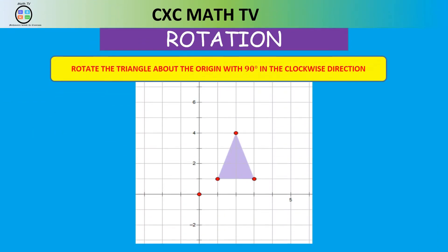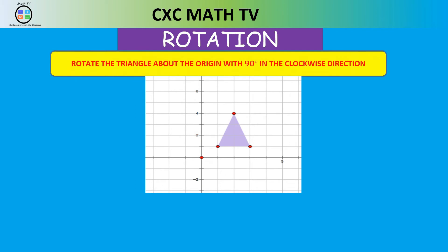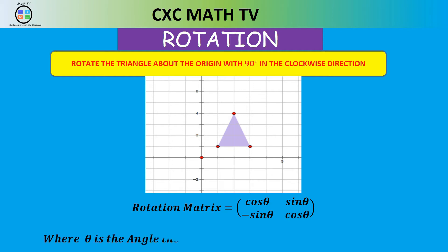Now look at this question: rotate the triangle about the origin 90 degrees in the clockwise direction. To do this, we first write down the rotation matrix, which is given by [cos θ, sin θ; −sin θ, cos θ], where θ is the angle of clockwise rotation.